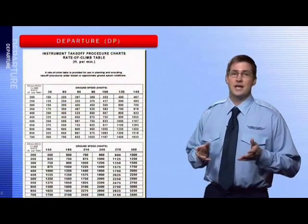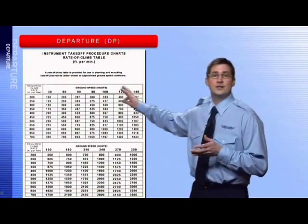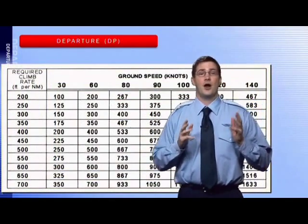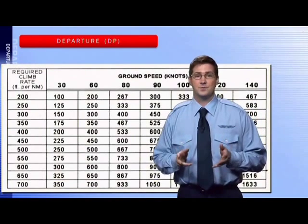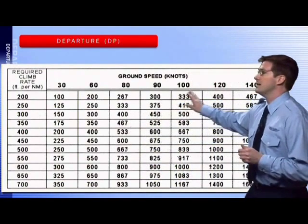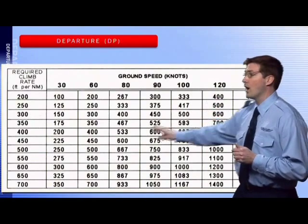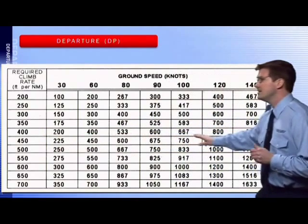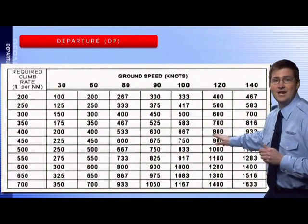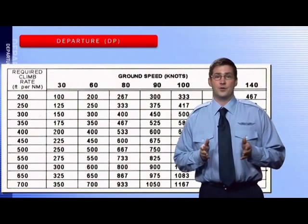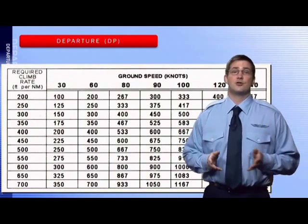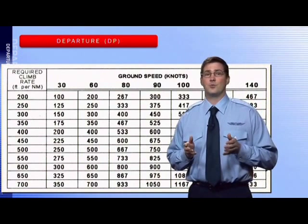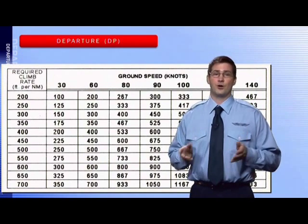This is an instrument takeoff procedure conversion chart that you can see right here. This chart converts feet per minute into feet per nautical mile, and it's based on ground speed. If our ground speed is 120 knots and our required climb rate is 400 feet per nautical mile, we can see that these two columns intersect right here at 800 feet per minute. If you have this scenario with a strong headwind decreasing your ground speed to 90 knots, you will only need 600 feet per minute to achieve the same climb gradient of 400 feet per nautical mile.